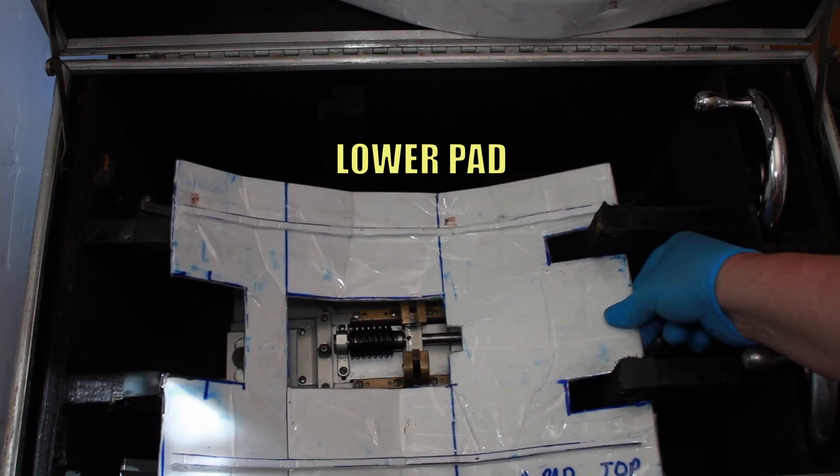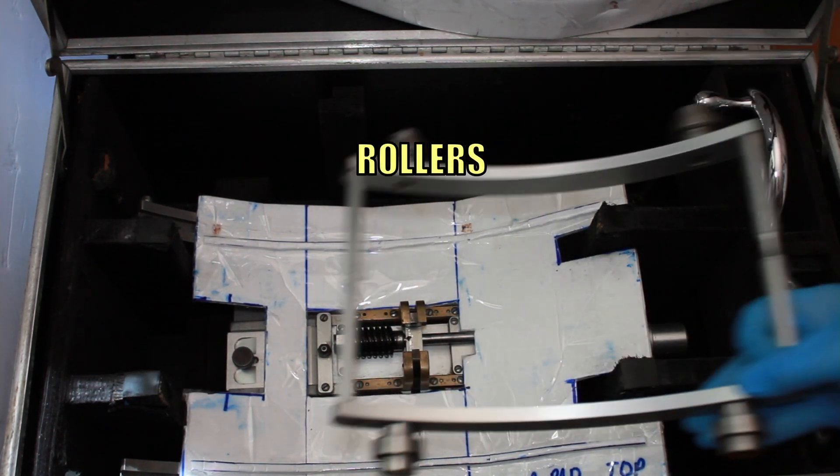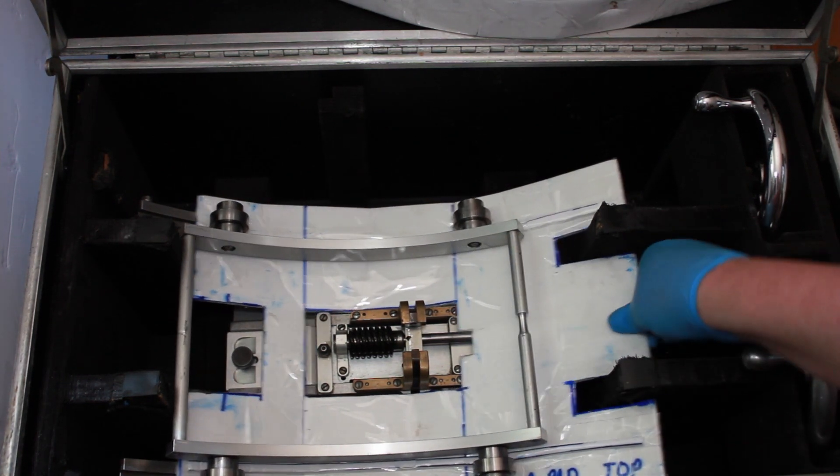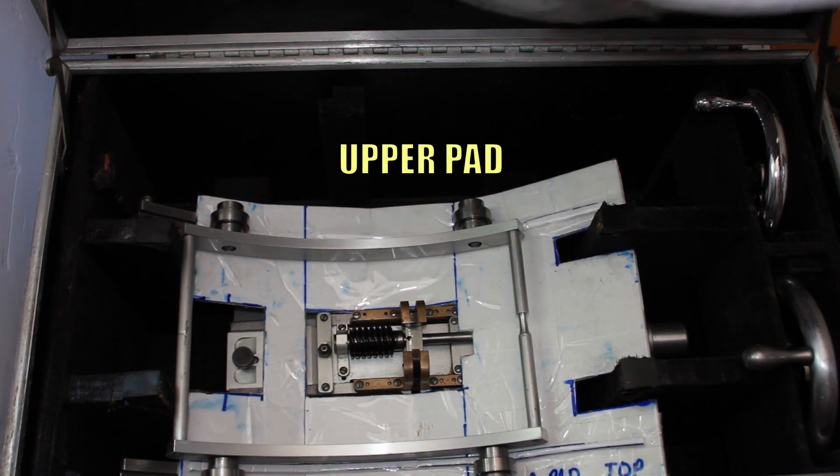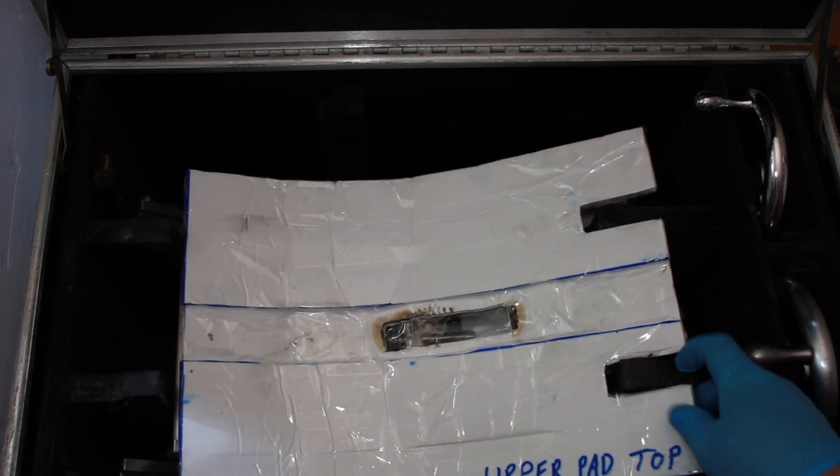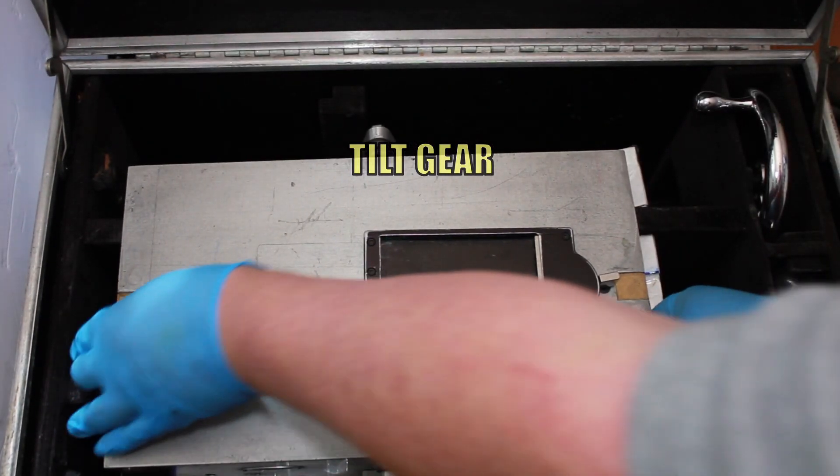Next, lower pad. Next, place rollers. Next, upper pad. Last, place the tilt gear.